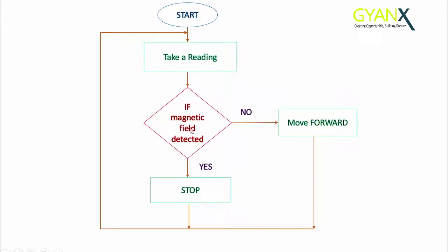This is how our magnetic field detecting robot flowchart would look like. The task of this robot is to search for magnetic fields in the surrounding area.